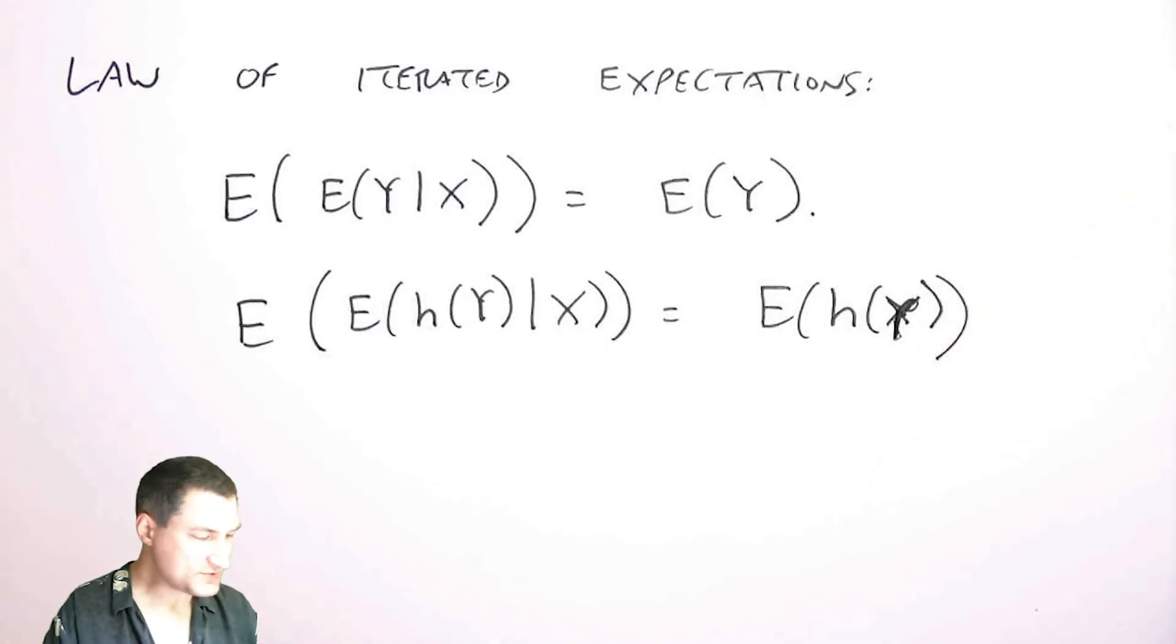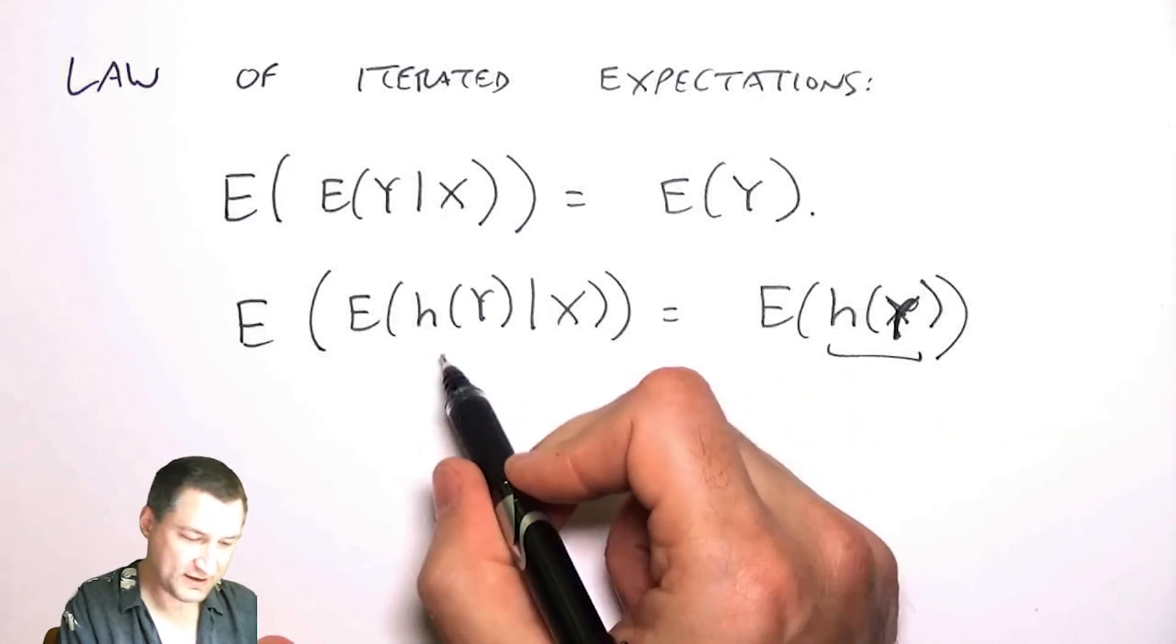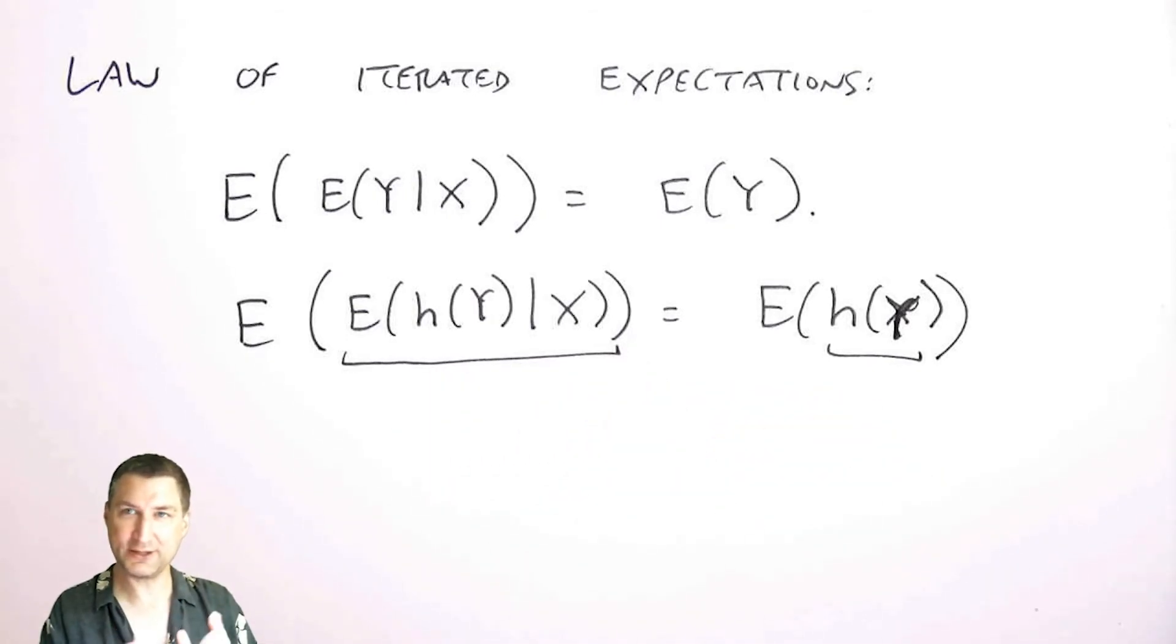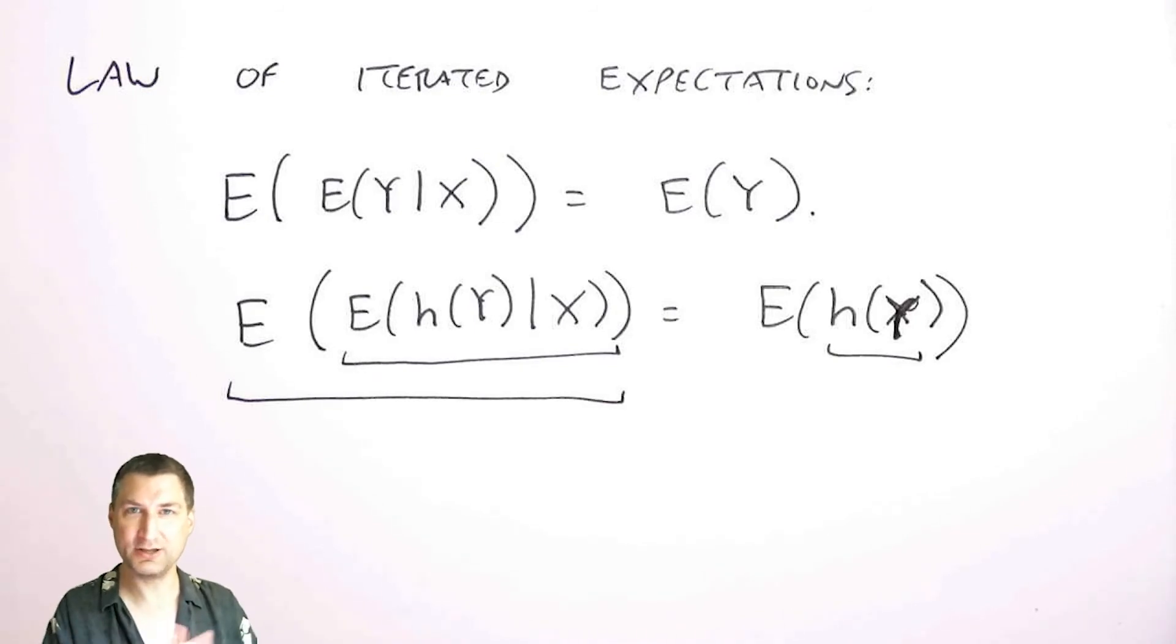So that is, we think of computing this expected value in two steps. First, we compute the expected value conditioned on some value of x. And then we do an outer expectation conditioned on all the possible values that x can take.